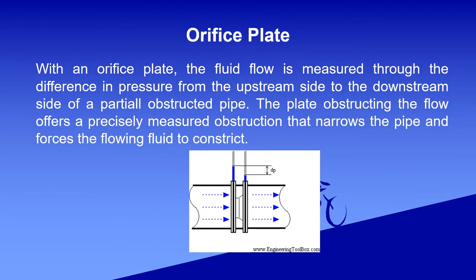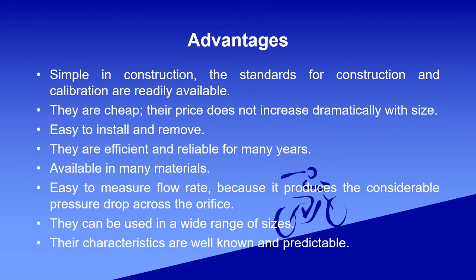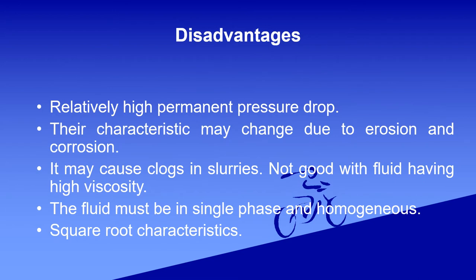The first one is the orifice plate. The fluid flow is measured through the difference in pressure from the upstream side to the downstream side. The advantages of the orifice plate include: simple in construction, cheap, easy to install and remove, efficient and reliable, available in many materials, easy to measure flow rate, can be used in a wide range of sizes, and its characteristics are well known and predictable.